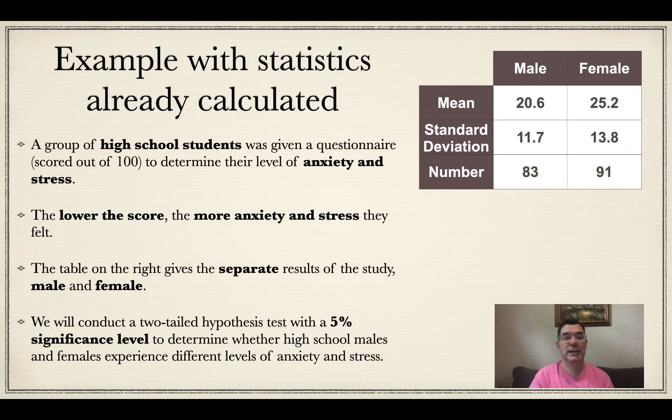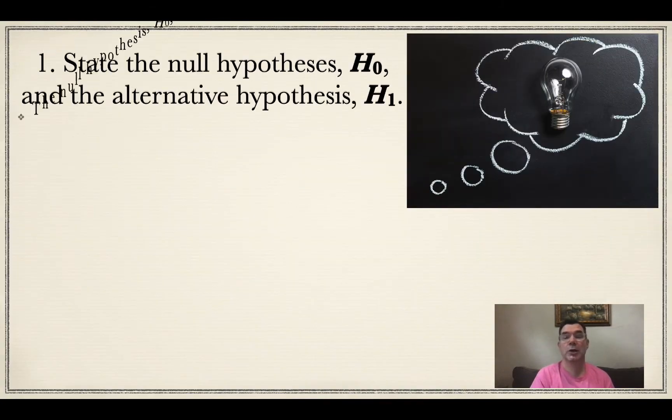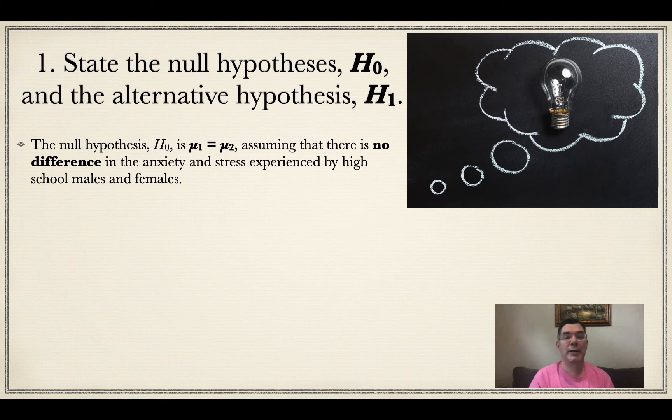Alright, so I'm going to conduct a two-tailed hypothesis test with a 5% significance level to determine whether high school males and females experience different levels of anxiety and stress or whether they are close enough to being the same. So the null hypothesis, remember, is the situation where there's really no difference.